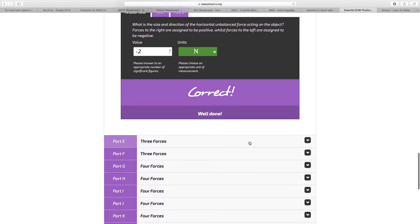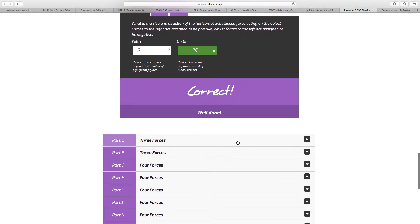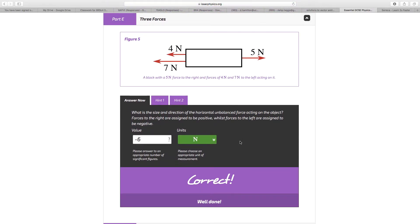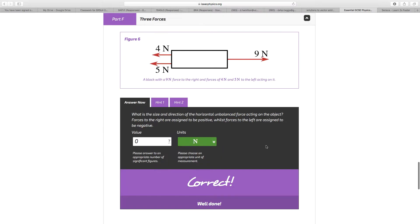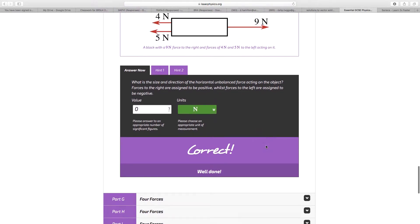The first one with a sign has been crucial to getting the answer right. 5 to the right, 4 and 7 which is 11 to the left, giving you minus 6 Newtons. 4 and 5 to the left, 9 to the right, so they exactly balance, 0 Newtons.